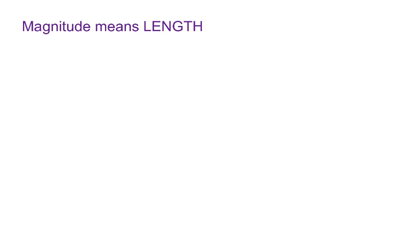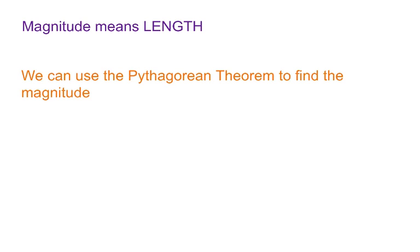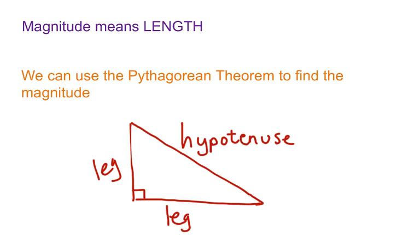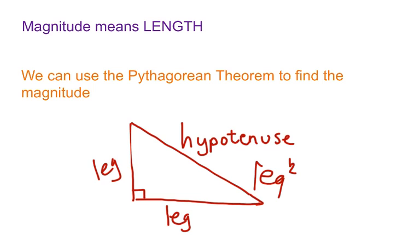First of all, magnitude means the length of something, as we talked about in a previous video. One thing we're going to be using is the Pythagorean theorem to find the magnitude of a vector. Just to review, the Pythagorean theorem is for a right triangle — meaning you have a 90-degree angle — and leg squared plus leg squared is equal to hypotenuse squared.